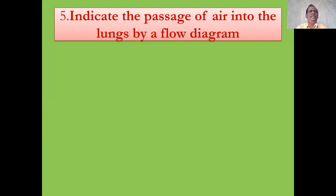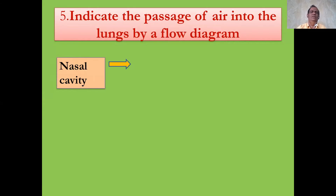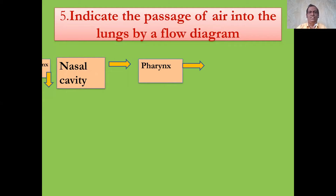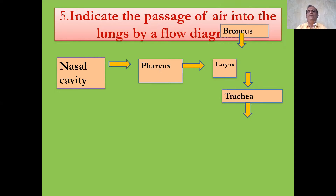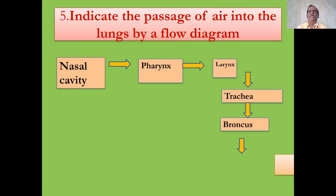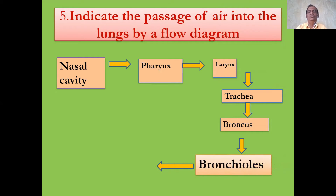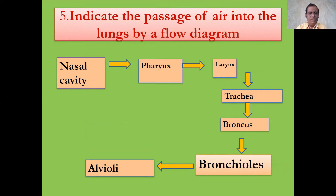Indicate the passage of air into the lungs by a flow diagram. First it starts from the nasal cavity, then the air goes to the pharynx, next the air moves to the larynx, then to the trachea, after the trachea to the bronchus, then to the bronchioles — very tiny tubes found in the respiratory system — and finally the air goes to the alveoli. The alveoli is the functional unit of the respiratory system.